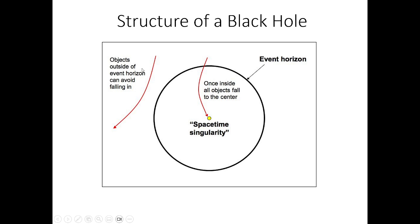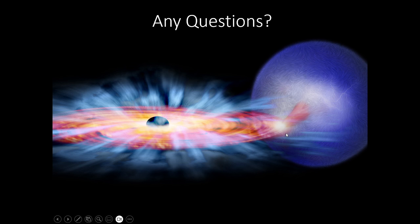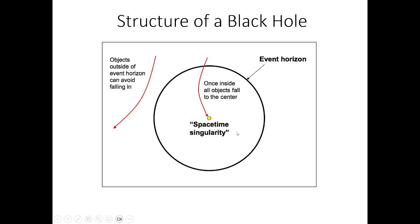And now, here's the structure of a black hole. Outside of the black hole, objects can avoid falling in. However, there is an event horizon around the black hole, and that's the boundary. Once you go past the event horizon, you can't get out. Any object can't get out, not even light. And it all goes down into this place called a space-time singularity, which is an infinitely dense point where there is no volume and infinite mass, essentially.